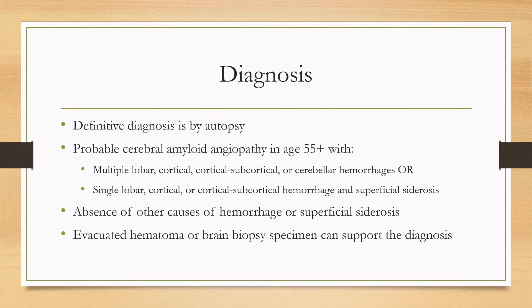How to make the diagnosis? The definitive diagnosis is by autopsy. However, in life, you can make a diagnosis of probable cerebral amyloid angiopathy if the patient is age 55 or older and has either multiple lobar cortical or cortical-subcortical hemorrhages or cerebellar hemorrhage, or a single lobar cortical or cortical-subcortical hemorrhage with superficial siderosis.